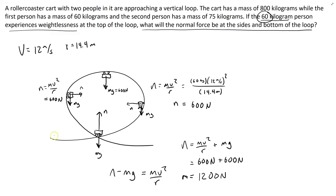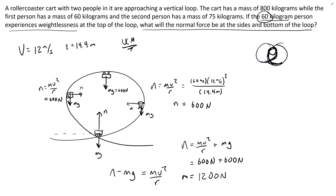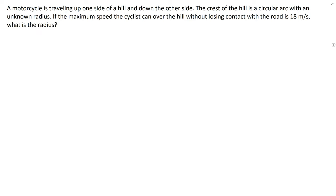As you enter the loop you feel twice as heavy at the bottom compared to the top. This assumes uniform circular motion. Real roller coaster loops aren't perfect circles — they often use two intersecting circles creating an inner radius you travel along, a different shape — but the AP test doesn't test that, so we don't need to worry about it.